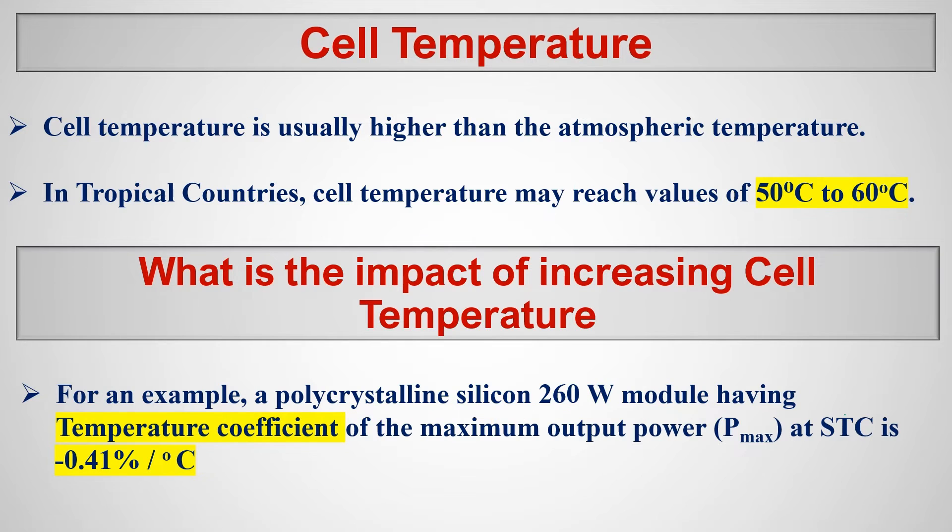So they are talking about what is the temperature of a cell on the solar module. Usually solar cell temperature is always more than the atmospheric temperature. This you can easily relate to the real scenario.